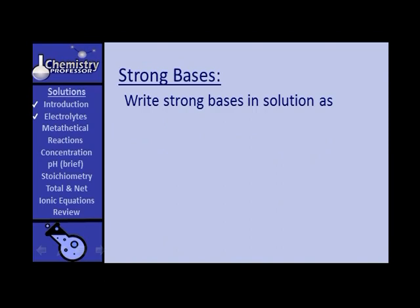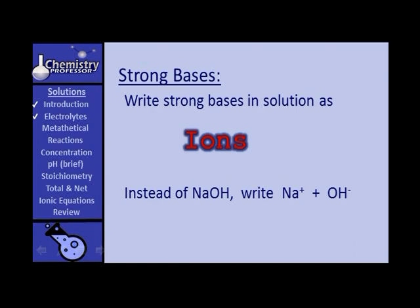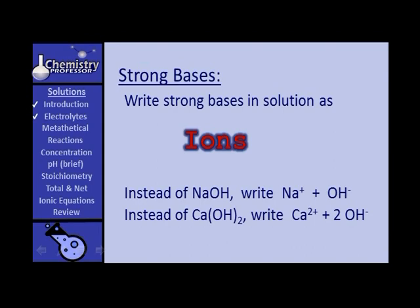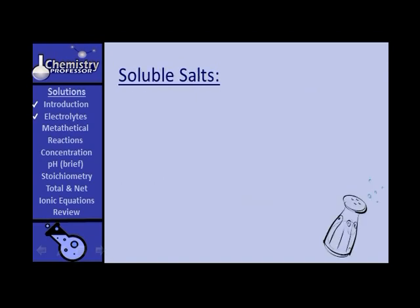When we write these strong bases in solution, we should write them as they appear predominantly — as ions. Instead of sodium hydroxide, write sodium ions and hydroxide ions. Instead of calcium hydroxide, write calcium ions and 2 hydroxide ions, because when calcium hydroxide breaks up, it gives 1 calcium ion and 2 hydroxide ions. Aluminum hydroxide, however, is written in the molecular form because it is not a strong base.